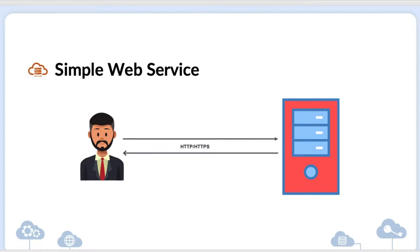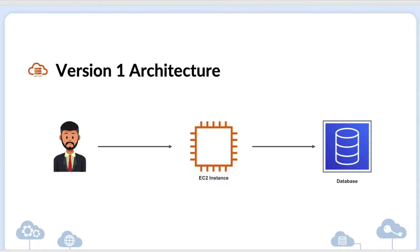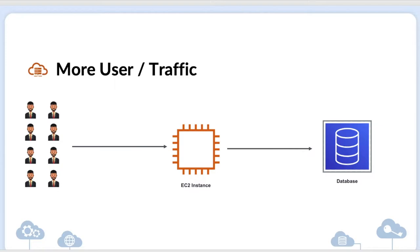This is a simple web application architecture running on-premises. Here you see we have the web server running on the server, and the user is accessing it with HTTP or HTTPS requests. Now if we need to migrate this application to AWS, we can use an EC2 instance where we deploy our web application, and for the backend we can use a database.